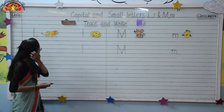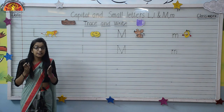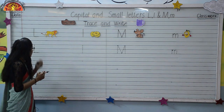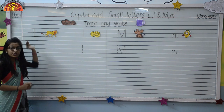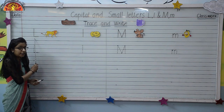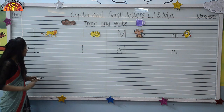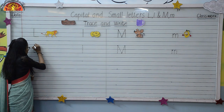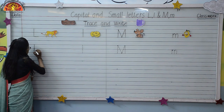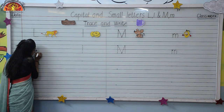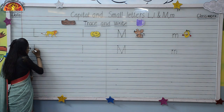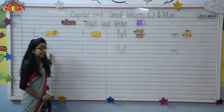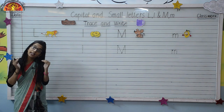Look here. First we will trace capital letter L. This is capital letter L. Let's start tracing. First, what we have to do? We have to make one standing line, then a sleeping line. Like this, you have to make capital letter L.